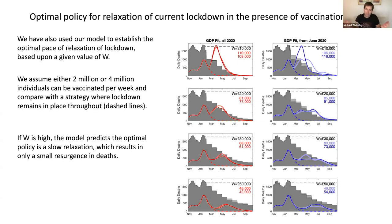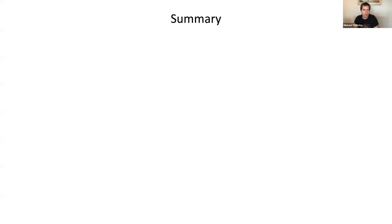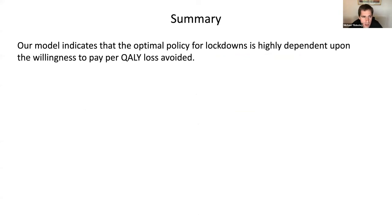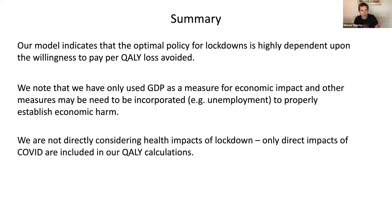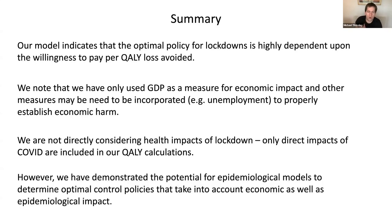But the result of releasing faster is you get a much bigger resurgence in number of cases. This really shows quite simply that dependent upon our objective we will recommend a very different optimal policy. To summarize: the optimal policy is highly dependent on willingness to pay. We have only used GDP as a measure for economic impact — there are other measures we'll need to incorporate to properly establish economic harm. And there are other health harms not included: we are not directly considering health impacts of lockdown, only the impacts of COVID are included in our QALY calculations.